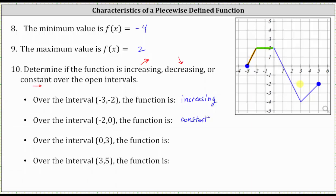Over the open interval from x equals 0 to x equals 3, the graph is going downhill from left to right, and therefore the function is decreasing over this interval. Finally, over the open interval from x equals 3 to x equals 5, the graph is going uphill from left to right, and therefore the function is increasing over this interval.